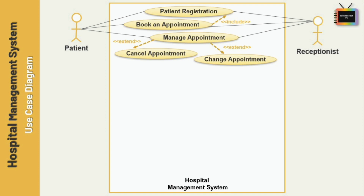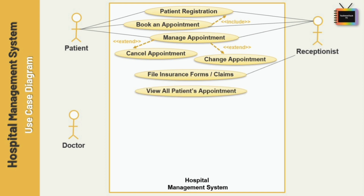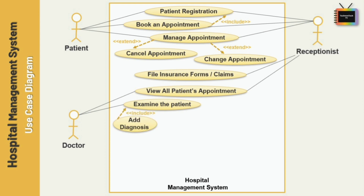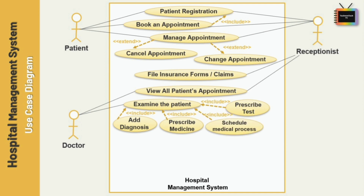Next, the receptionist handles file insurance forms or claims-related info. I am adding the actor 'Doctor'. Doctor can view all patients' appointments, and at the same time, receptionist can also view all patients' appointment information. Doctor can examine the patient, and after examination, add diagnosis details, prescribe medicine and tests, and schedule further medical processes. I have added include relationships for all four use cases, because without examining the patient, the doctor cannot add diagnosis or prescribe medicine.